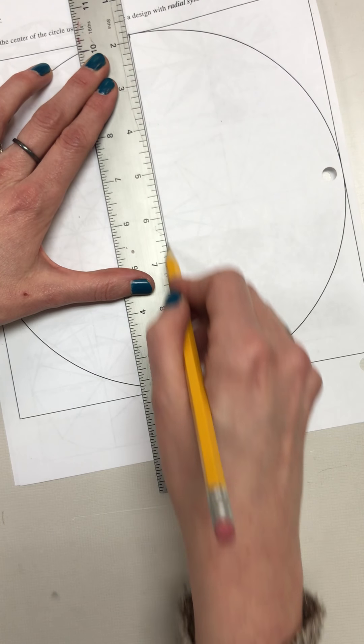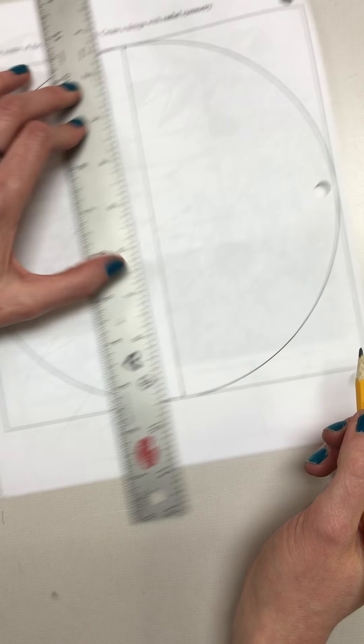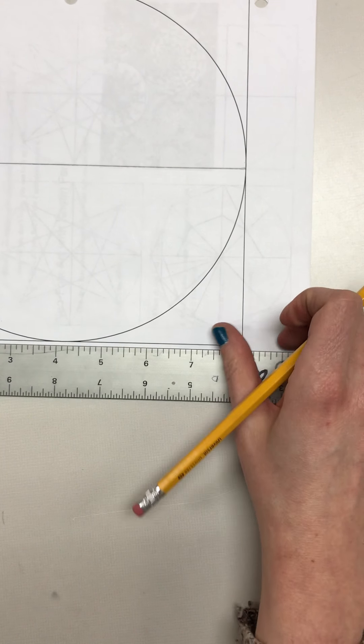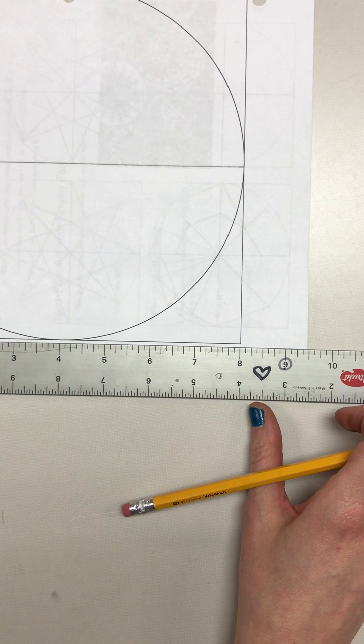We'll measure it on the side—it should be eight inches because I know it's a perfect circle. Yes, it is eight inches. So I'm going to make a mark at four, make a mark at four.